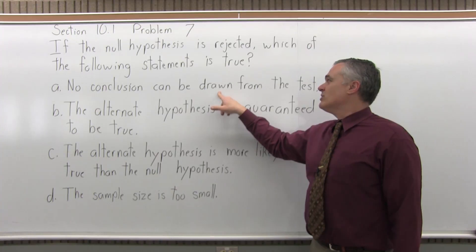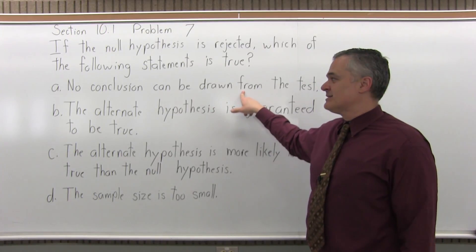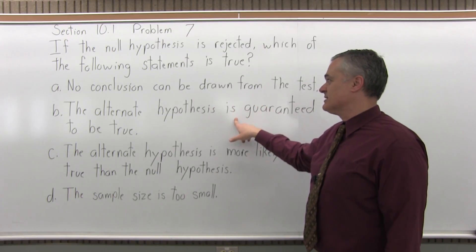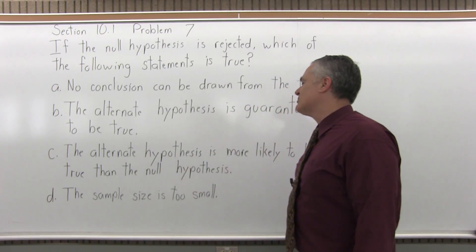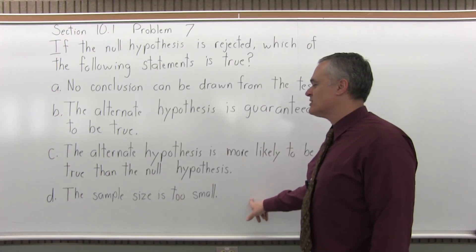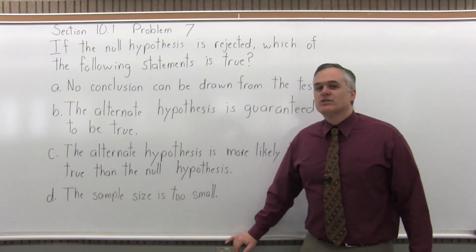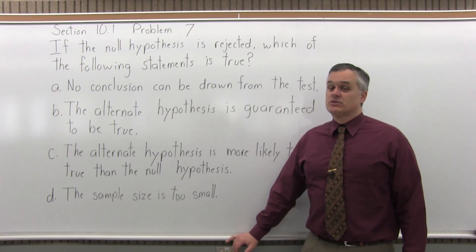So one option is no conclusion can be drawn from the test. Another one is the alternate hypothesis, the one other than the null, is guaranteed to be true. C, the alternate hypothesis is more likely to be true than the null hypothesis, or D, the sample size is too small. Which of these is true? So it might be more than one.